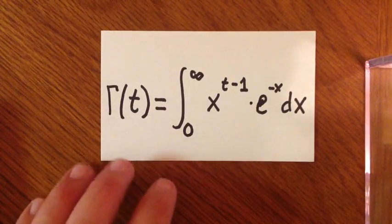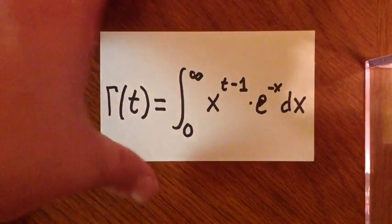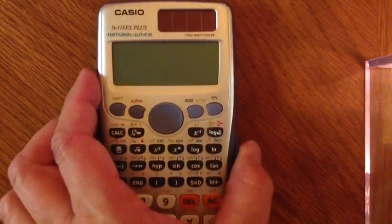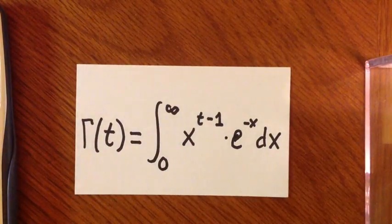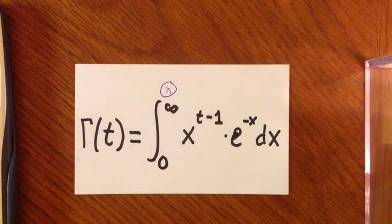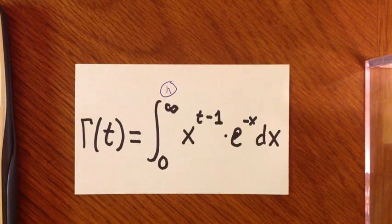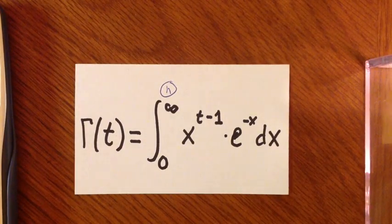You notice in the integral the upper limit is infinity. On a scientific calculator, we don't have infinity to work with, so what we do is we pick an n here to be the upper limit.